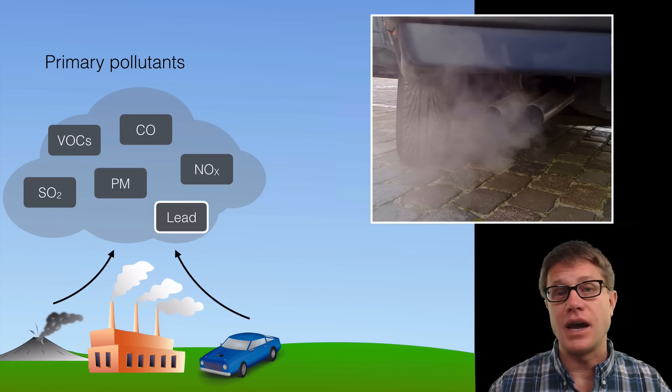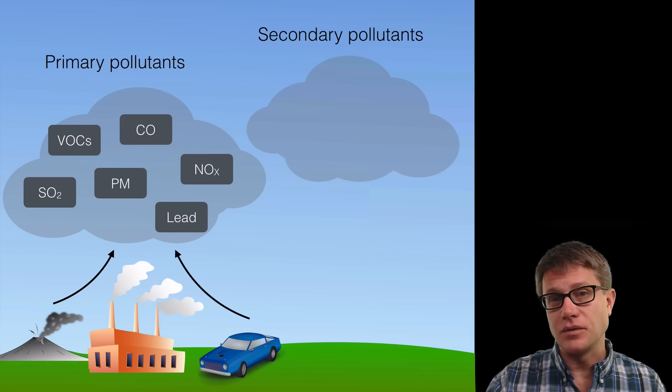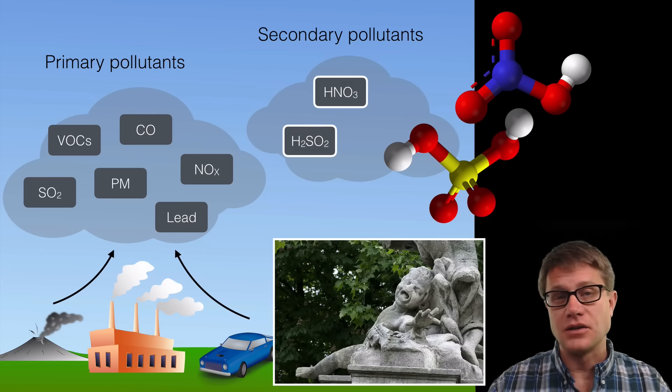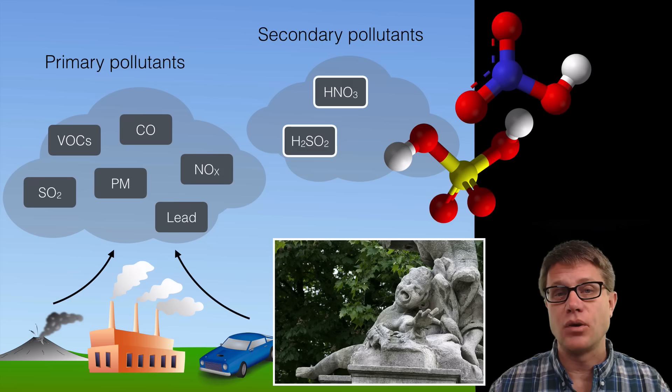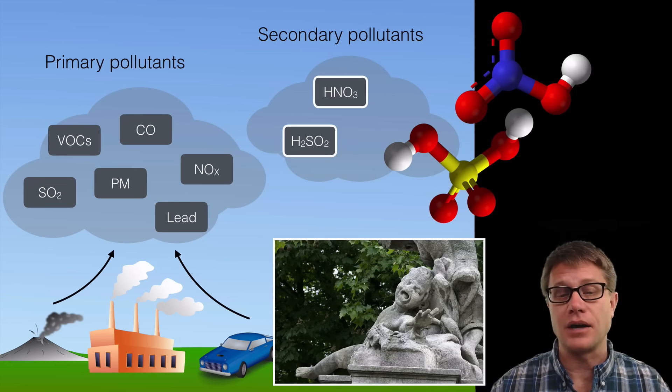And then we have chemicals like lead. We used to add lead to our gasoline. And there are huge neurological impacts of lead. Now again these primary pollutants can produce secondary pollutants. And so the nitrogen and the sulfur can lead to nitric acid and sulfuric acid. And these lead to acid rain. It can dissolve statues like this. But more importantly it changes the pH in the whole food web and can impact living systems.